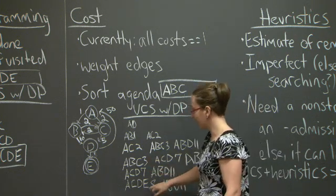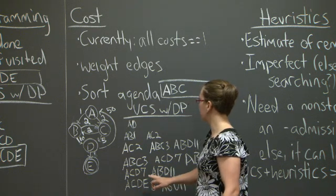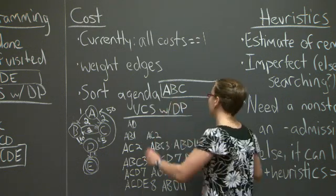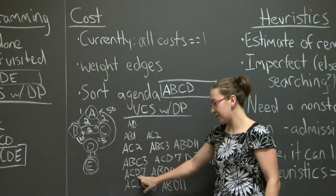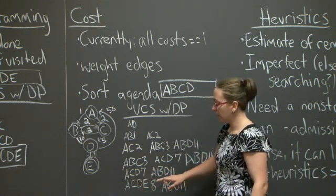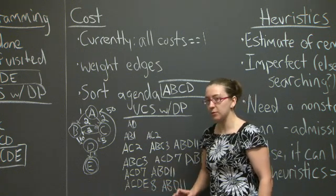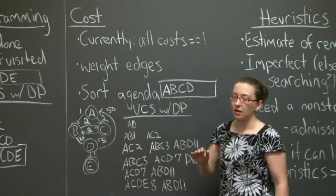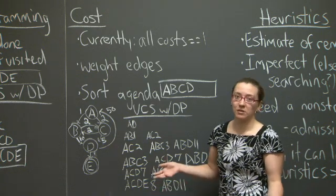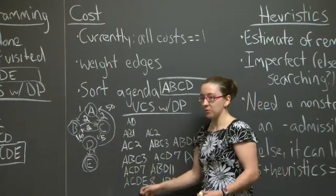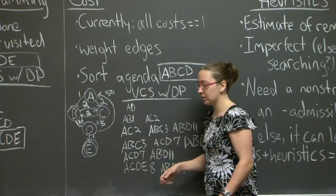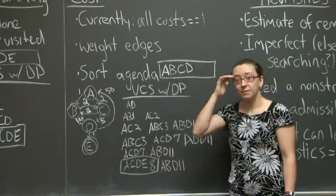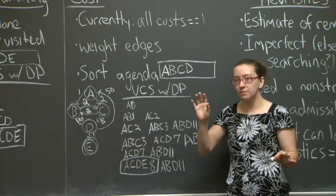So at this point, I get to expand E. I skipped adding D to the expanded list when I expanded it from ACD to ACDE. At this point, I'm going to expand E, and the first thing I'm going to do is test and see whether or not it passes the goal test. At that point, I stop search, return that I successfully completed the search, and that my partial path is going to be ACDE. That covers uniform cost search.